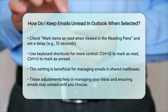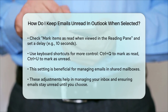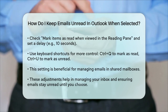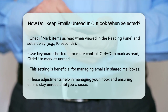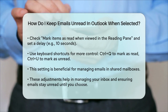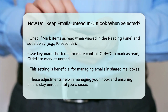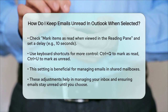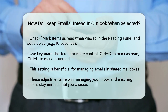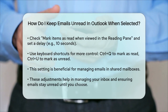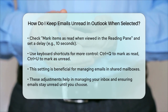In summary, to keep emails unread in Outlook when selected, you need to adjust the Reading Pane settings to prevent automatic marking and optionally set a delay. Using keyboard shortcuts can also give you more control over the read status of your emails. By making these changes, you can manage your inbox more effectively and ensure that emails aren't marked as read until you're ready.